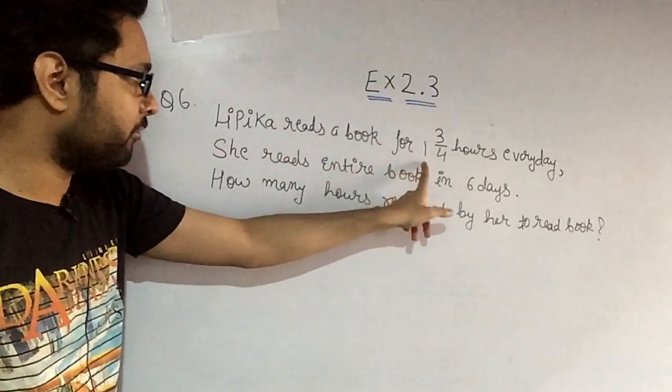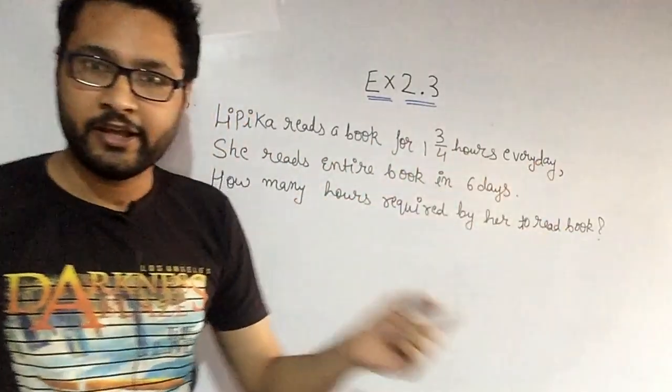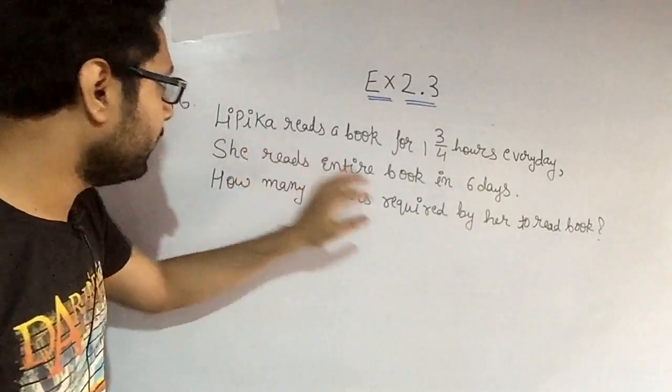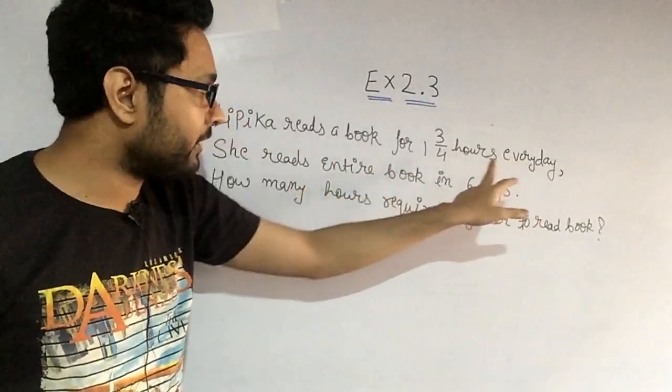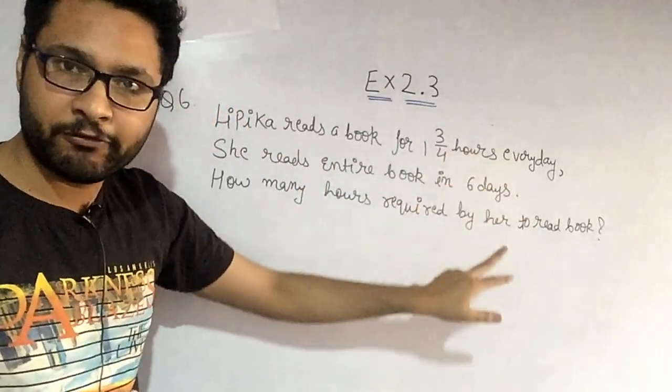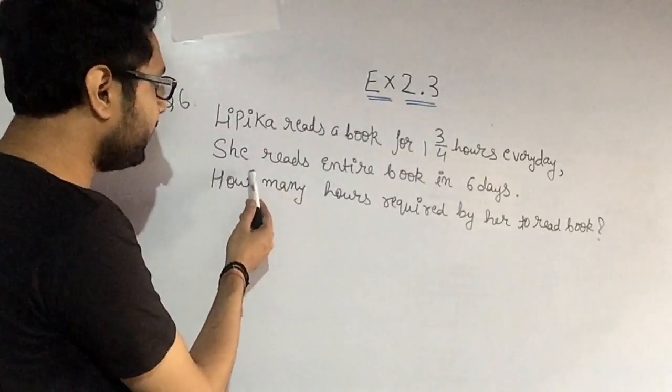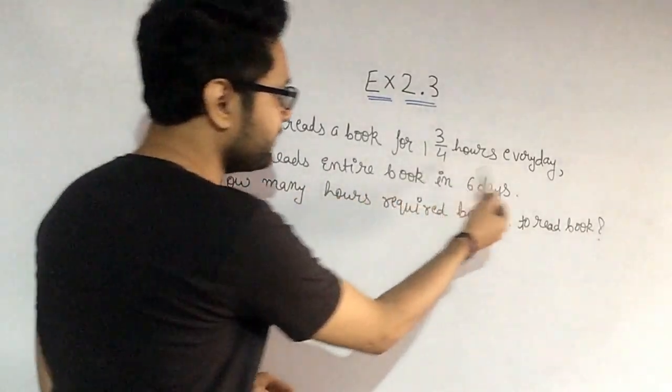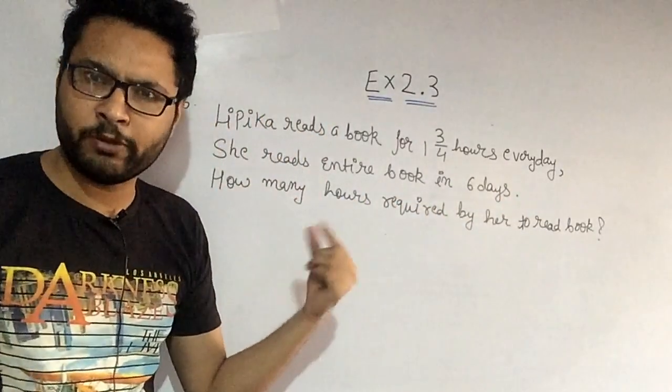Lipika reads a book for 1 3 by 4 hours every day. A girl whose name is Lipika, she reads a book every day for 1 3 by 4 hours. Then what is written in the next line? She reads the entire book in 6 days.